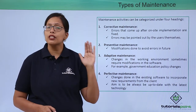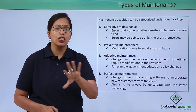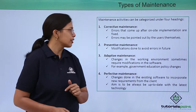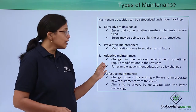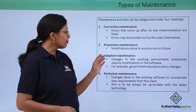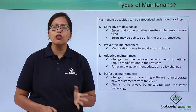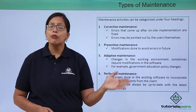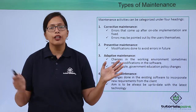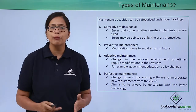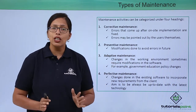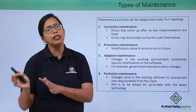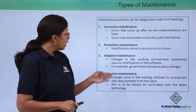Preventive maintenance may also be triggered if there has been some change in business process or government rules and regulations affecting the business. Adaptive maintenance refers to changes in the working environment that sometimes require modification in the software — for example, some rules and regulations have changed, or the company has merged with a new company, bringing new regulations, new employees, and a whole new hierarchy.